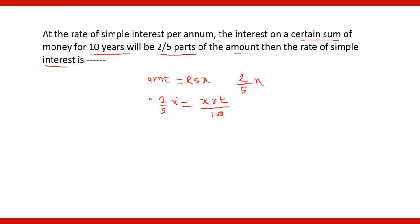And therefore if you solve this, x and x will get cancelled and time is 10 years. So you will get 2/5 is equal to R into 10 by 100. Cross multiply, take 10 to the other side, so it will be 10 into 2 that is 20 by 5 which is equal to R. And therefore the rate of interest is equal to 4%.